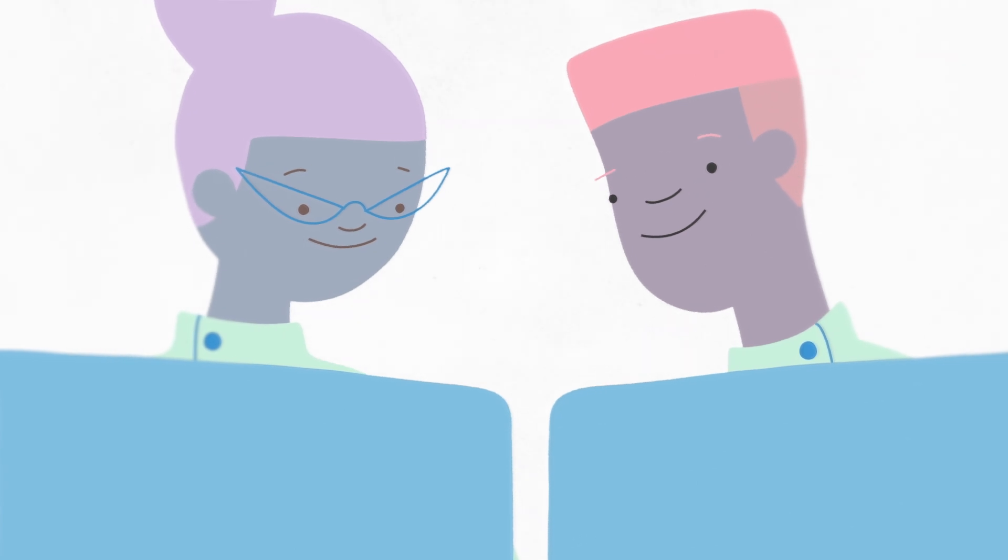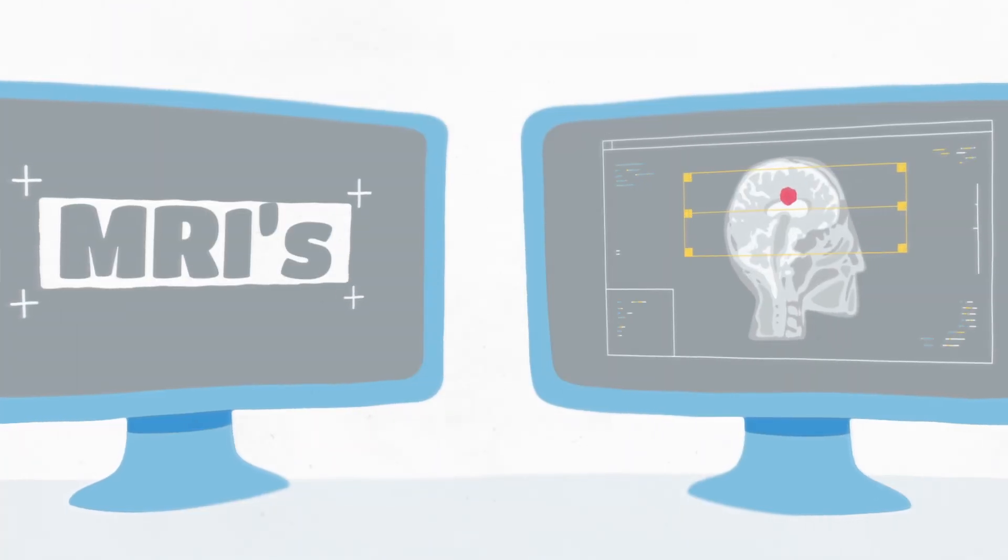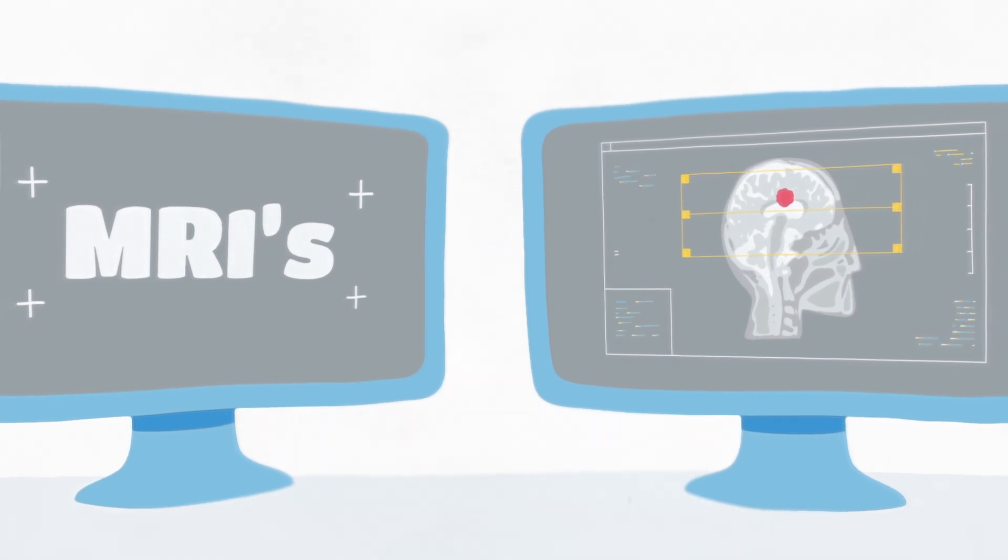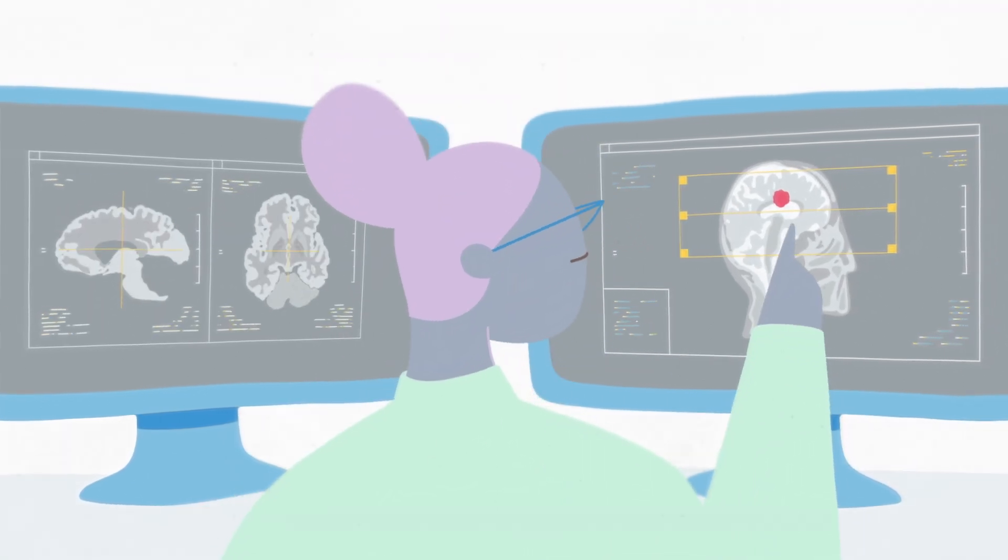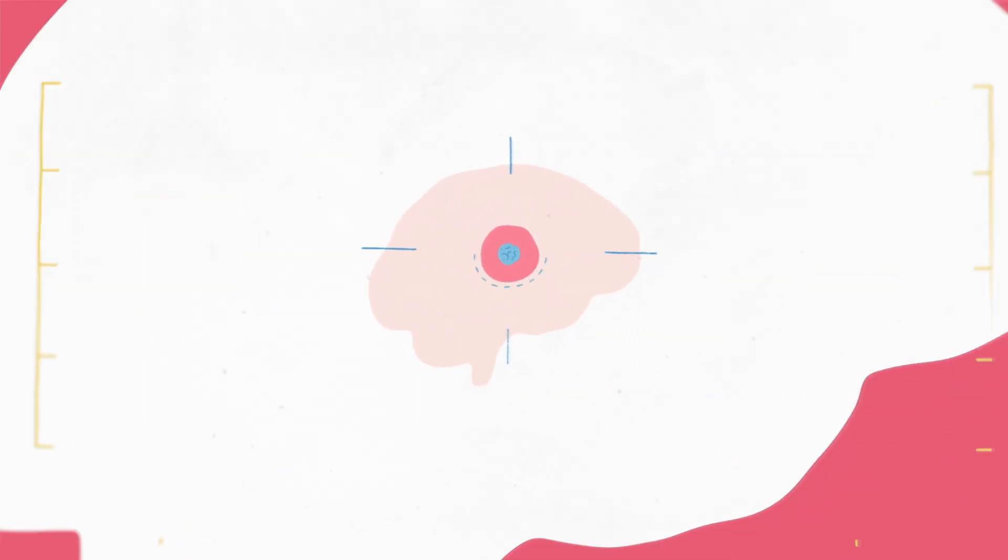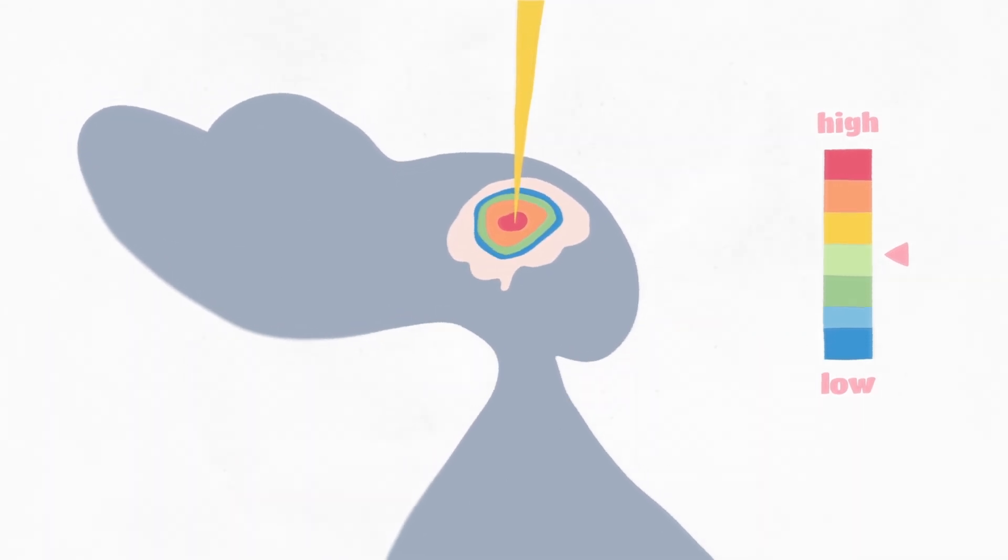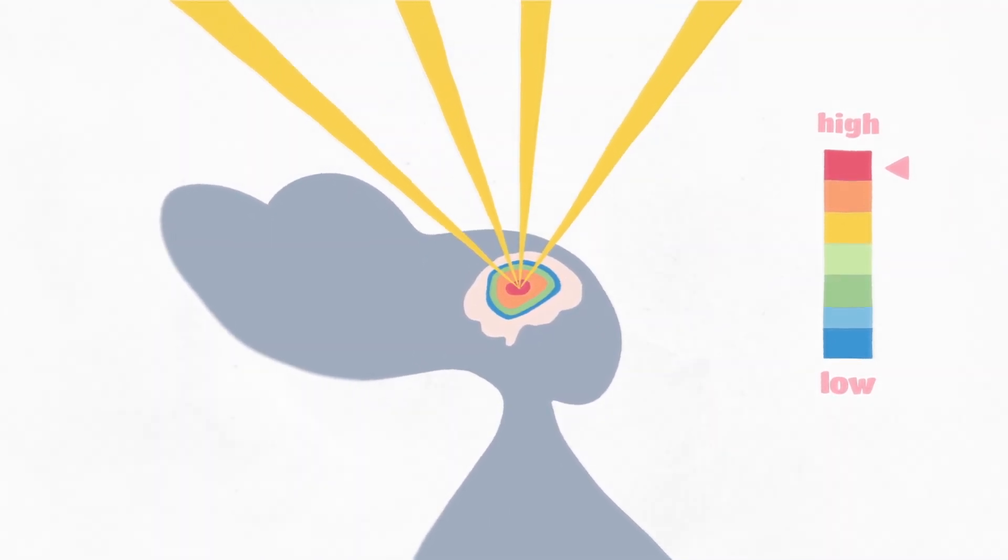Doctors might also use magnetic resonance imaging, or MRIs, that produce finer images of soft tissue to assist in better outlining a tumor's shape and location. Mapping its precise position and size is crucial because of the high doses of radiation needed to treat tumors.